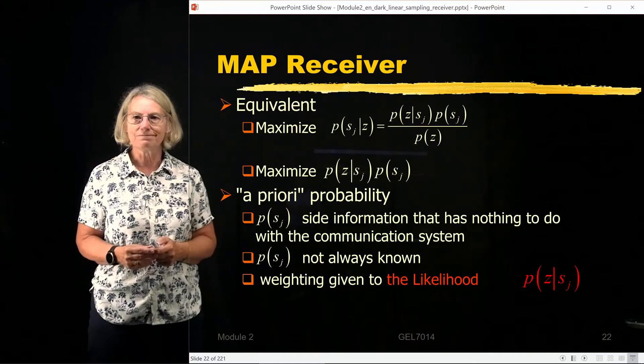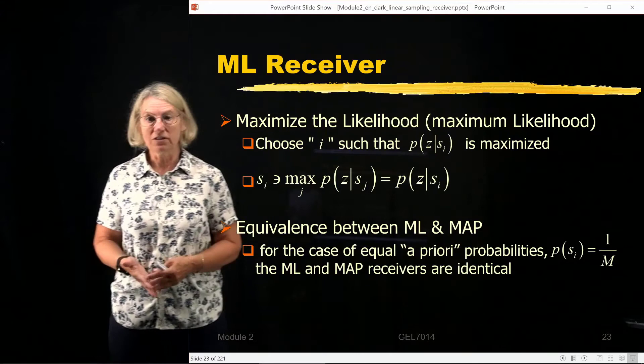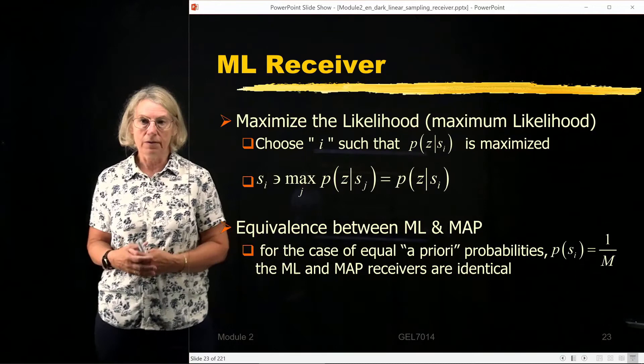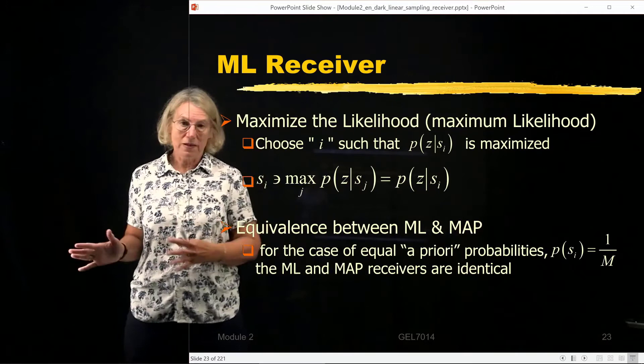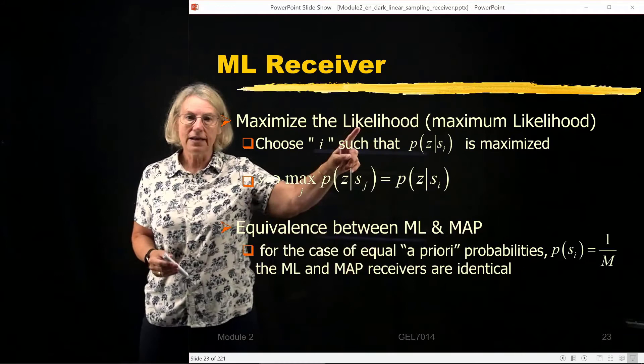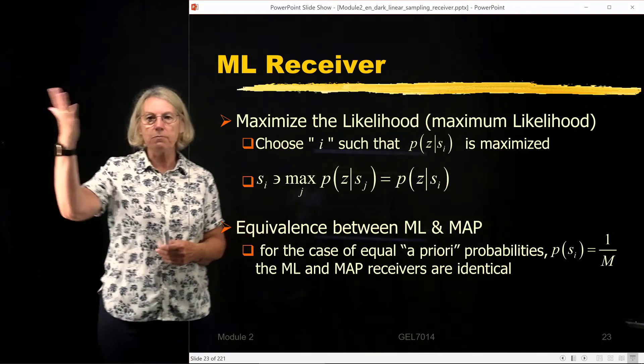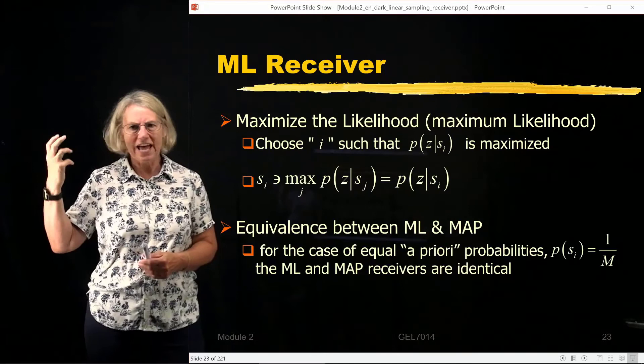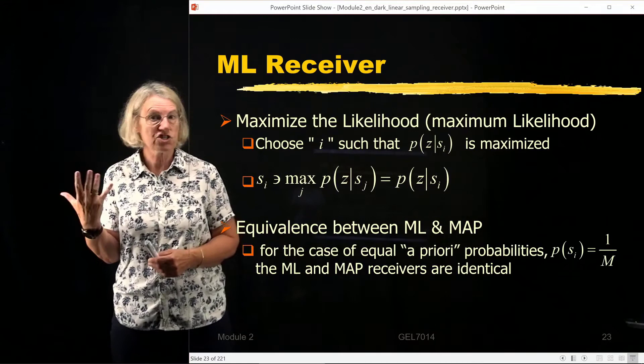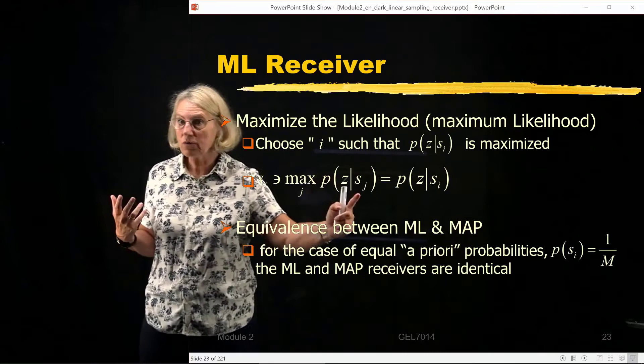Now, the second possibility I said is the maximum likelihood receiver. The maximum likelihood receiver is one that does not use the a priori probability because if it's not available, for instance. In this case, I don't use Bayes' Law. I said I'm just going to maximize the likelihood function. So now I'm not using Bayes' Law. I'm just taking the likelihood function and I'm saying choose whichever index maximizes the likelihood. So I have a certain probability for this test statistic that I observed. A very large number. Z is a very large number. So is it more probable that I would get a large number if 0 was sent? Or is it more probable that I would get a large number if 1 was sent? So I'm just using that information. I'm not weighting it with any information about which of the 0 and the 1 would be more probable.